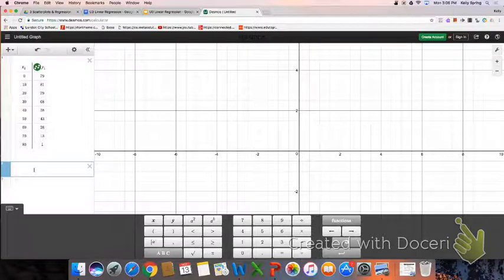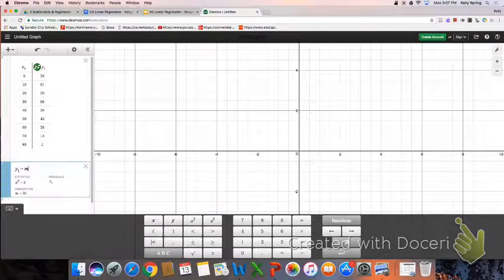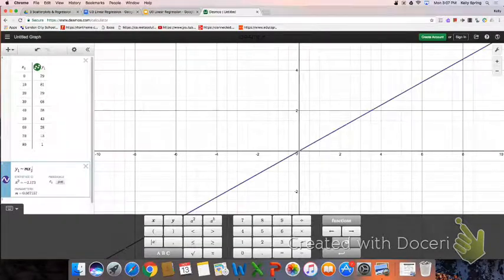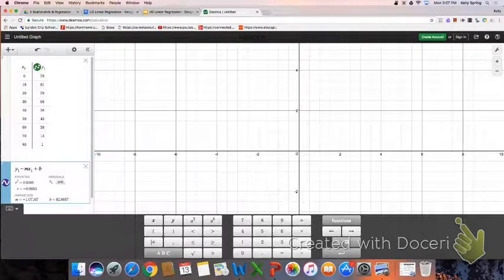And I want it to run the regression and I want it to put it in slope-intercept form. So I'm going to write y1 squiggly line mx1 plus b. So it's going to tell me what the slope is and what the y-intercept is. So here you see it.